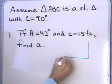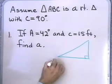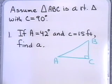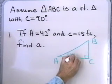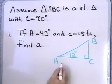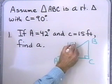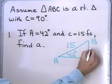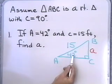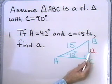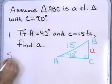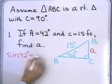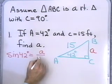I'm going to draw a little reference triangle and label the angles A, B, and C. Let's fill in the information we're given: 42 degrees for angle A, and side C is 15 feet. What I'm looking for is the length of side A. What trigonometric function relates angle A, side A, and side C? The sine of 42 degrees equals the side opposite, which is A, divided by 15.